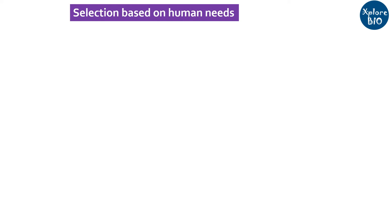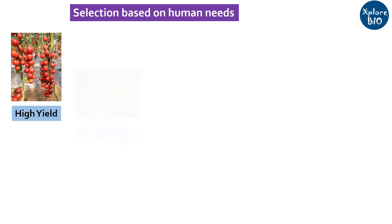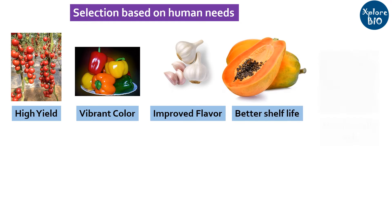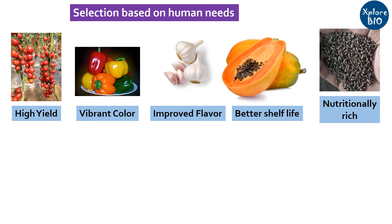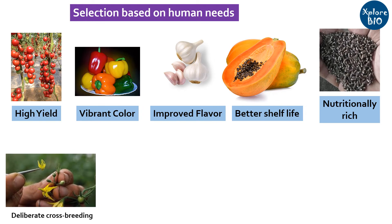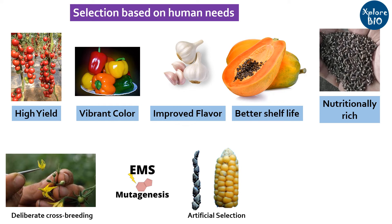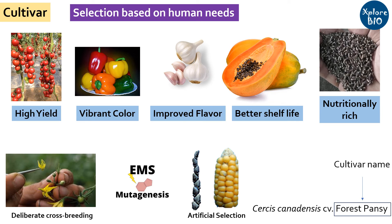But what if you want a crop that is more than just adaptable to the local environment? What if you want crops with traits like prolific yields, vibrant colors, super flavors, extended shelf life, or nutritionally enriched? Researchers deliberately perform breeding, mutagenesis, and artificial selection in order to obtain crops with such desirable characters. The crop developed through such artificial selection methods is termed a cultivar. Cultivar name is written with first letter capitalized and non-italicized, and preceded by the abbreviation CV.